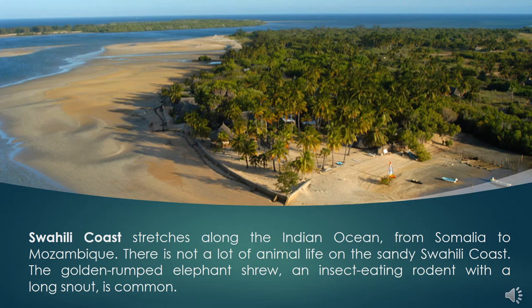The Swahili coast stretches about 1,610 kilometres along the Indian Ocean, from Somalia to Mozambique. The nearby coral reefs and barrier islands protect the coast from severe weather. There is not a lot of animal life on the sandy Swahili coast. The golden-rumped elephant shrew, an insect-eating rodent with a long snout, is common. A small, primitive species of primate known as the bush baby inhabits vegetated areas of the Swahili coast. Bush babies, which have enormous eyes for hunting at night, feed primarily on insects, fruit, and leaves.